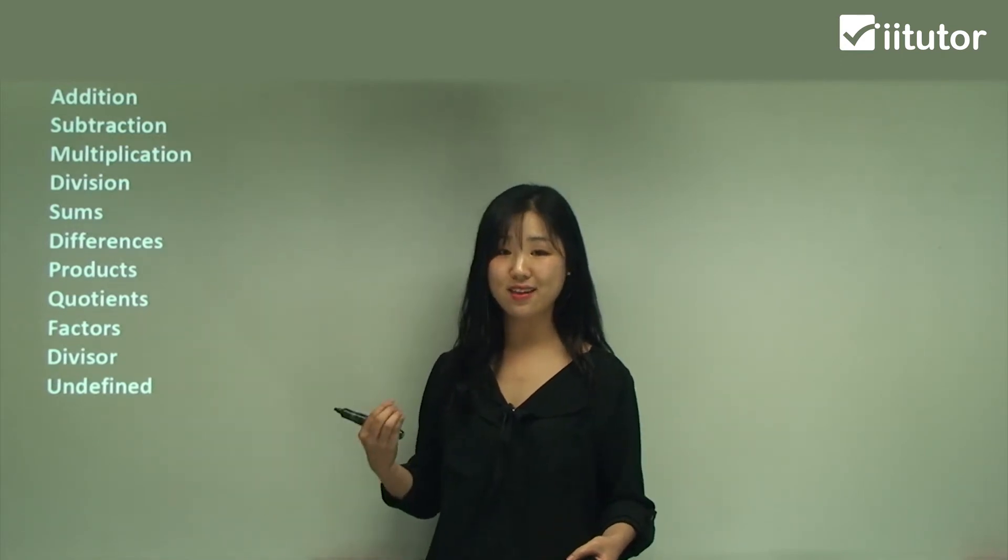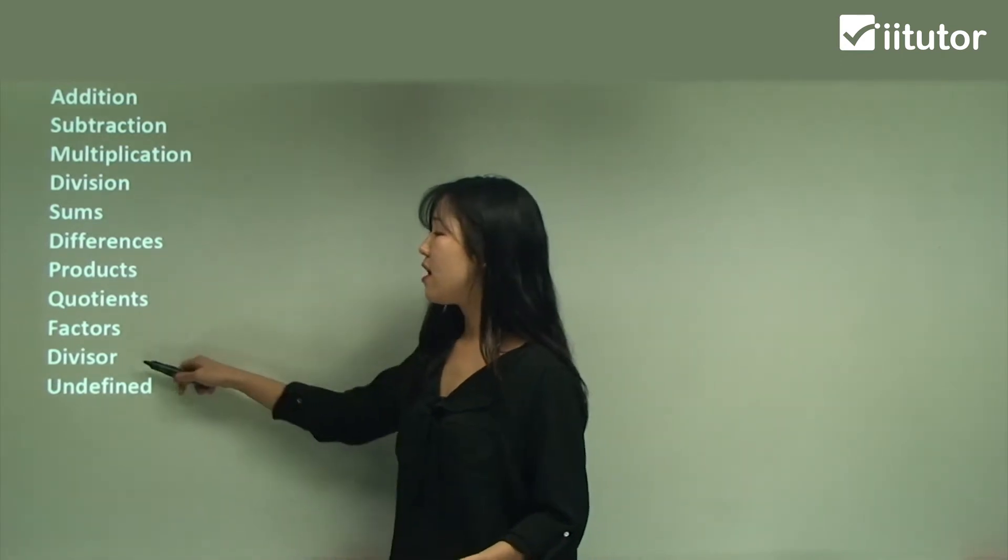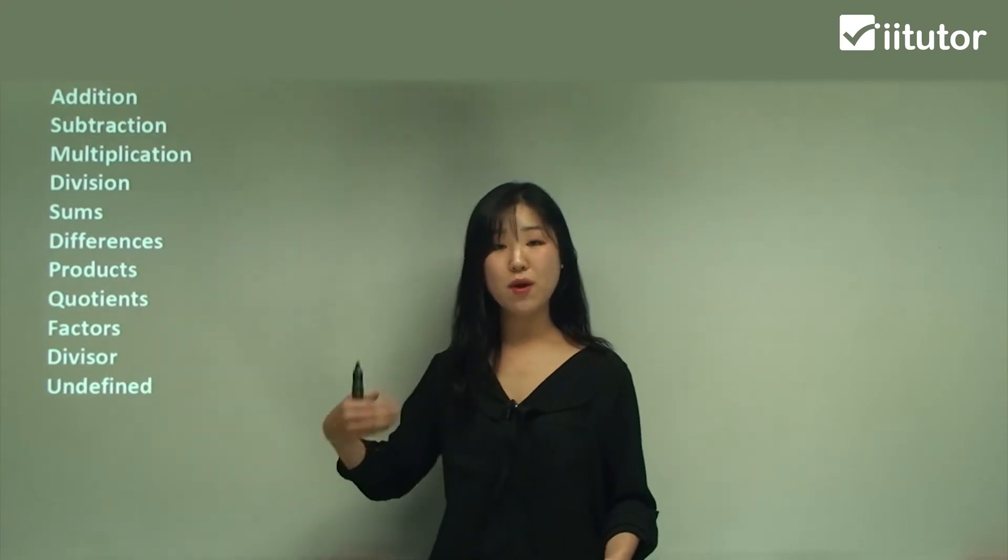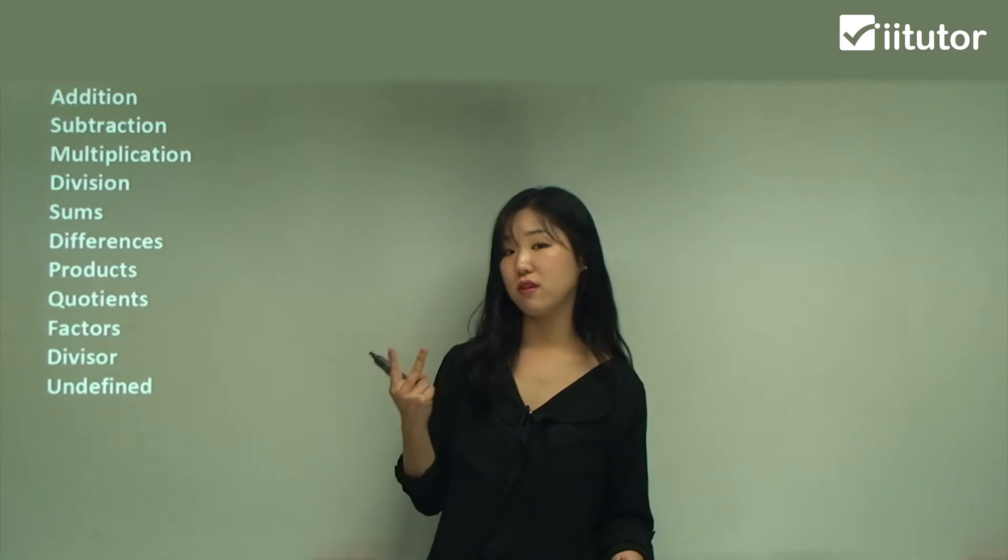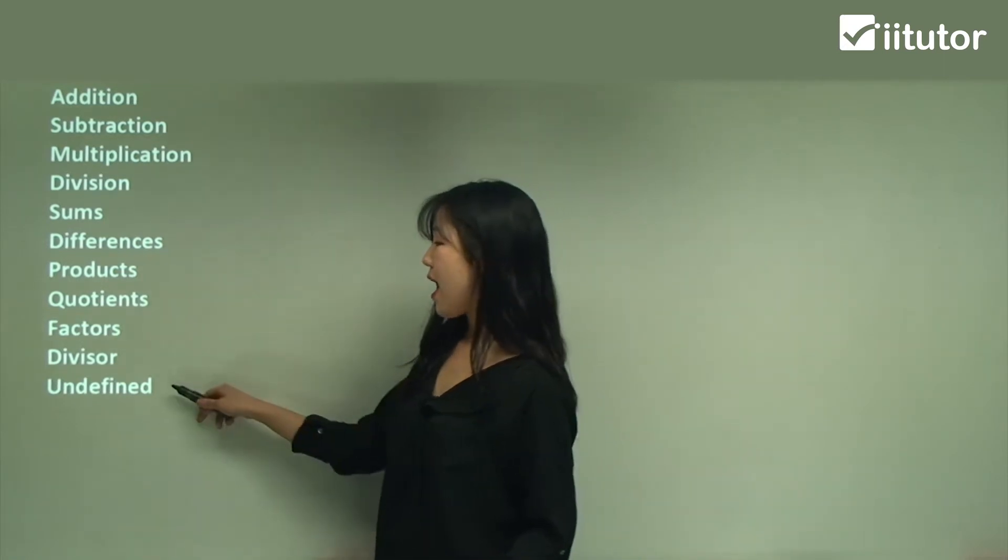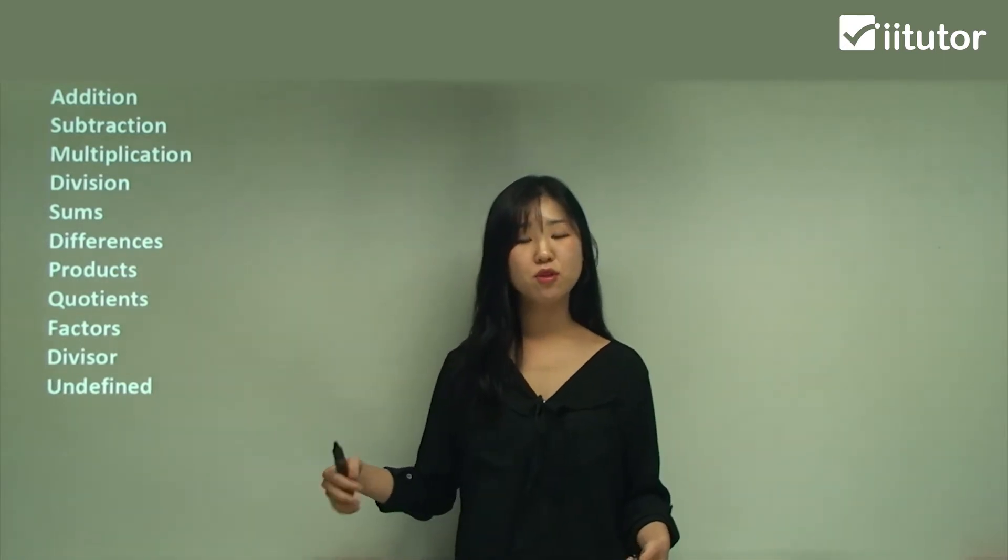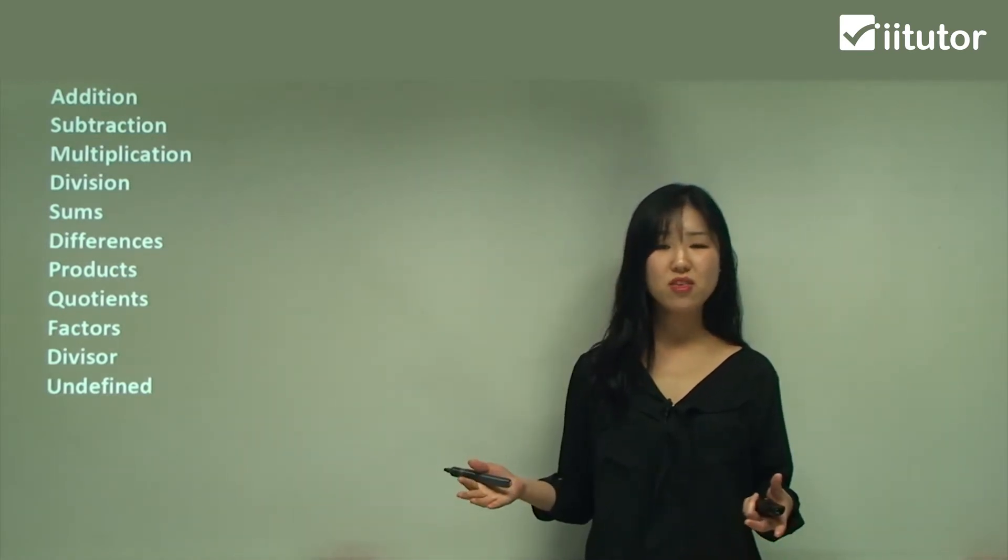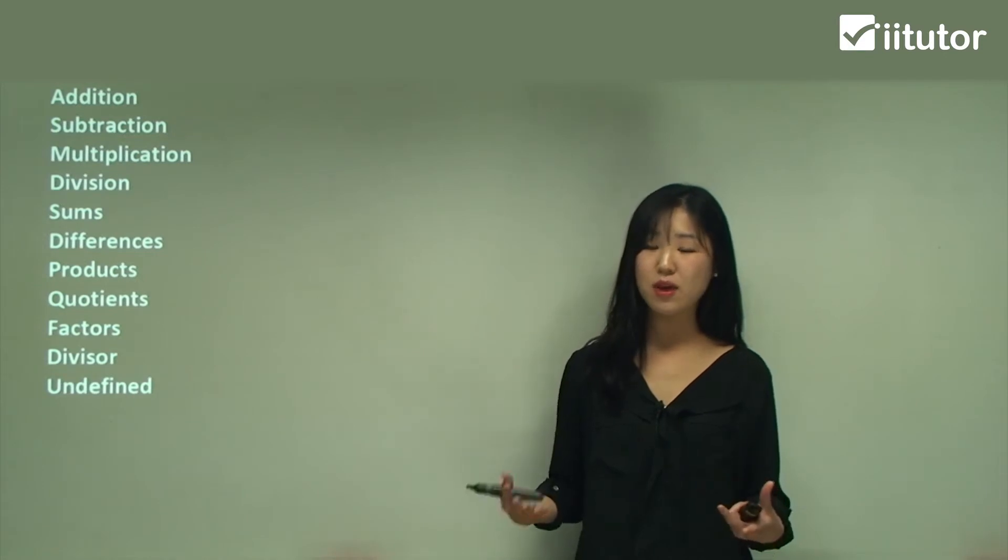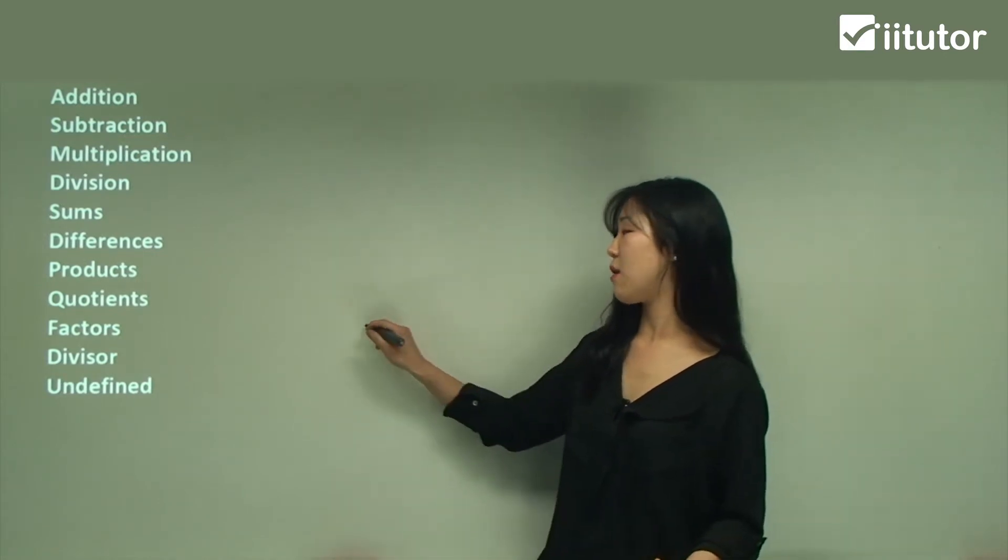Now factors—we know factors of say four is one, two, and four. The numbers that multiply to get to that number are the factors. Divisor is the number that we're dividing by. So if you're dividing eight by two, two is the divisor because we're dividing the number by two.